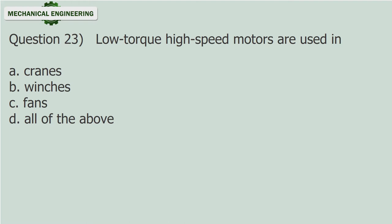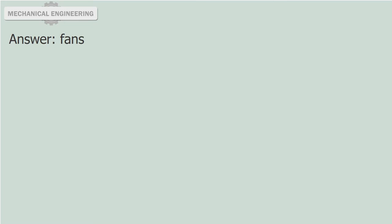Question 23: Low torque high-speed motors are used in — A) cranes, B) winches, C) fans, D) all of the above. Answer: Fans.